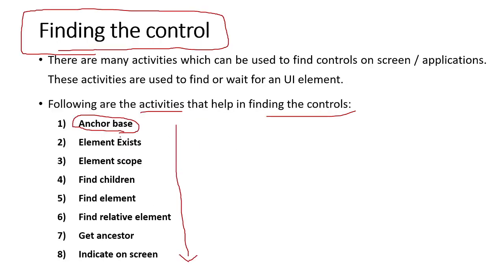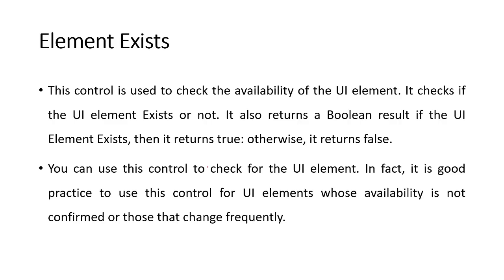The objectives of today's class are to learn two other interesting activities that help us find controls: one is Element Exist and the other is Element Scope. First we'll learn theoretically what Element Exist means, then take a practical example to demonstrate its use, and then repeat the same cycle for Element Scope.